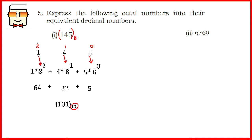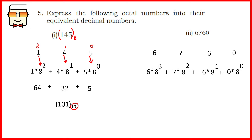Coming to the second part: octal number 6760. For each digit you multiply by the power of 8, with powers going from 0 to 3 from right to left. When you multiply the corresponding digits and solve, you get 3072 plus 448 plus 48 plus 0, and the final answer is 3568 in the decimal number system.